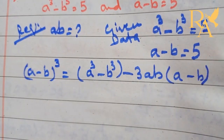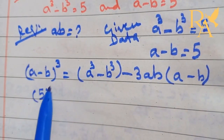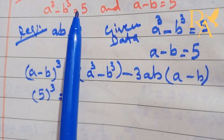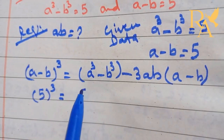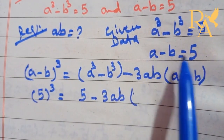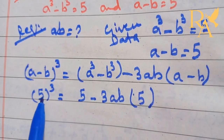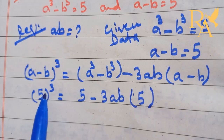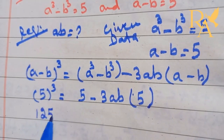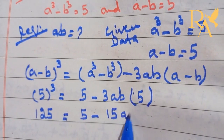Now put the values. A minus B is equal to 5, so here is 5 cube. A cube minus B cube is equal to 5. 5 minus 3AB, and A minus B is equal to 5. 5 to the power 3 is equal to 125, which equals 5 minus 15AB.